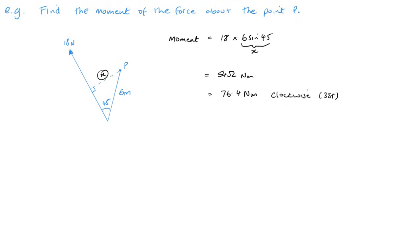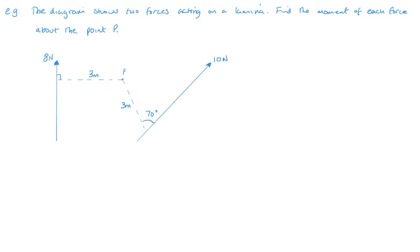Now let's look at the final example. So this example has two forces acting on the lamina about the point P. We need to find the moment of each force. So this time the moment of the 8 Newton force, that's going to be 8 Newtons times 3, so 24 Newton meters. And the direction it's going is clockwise.